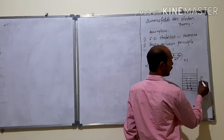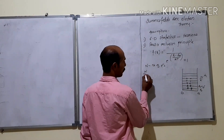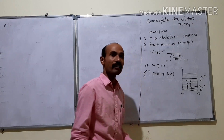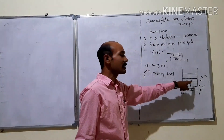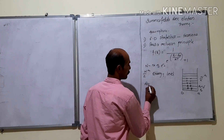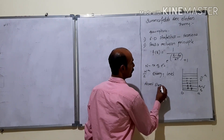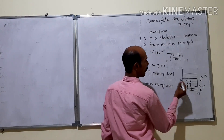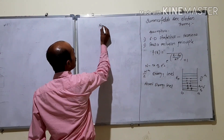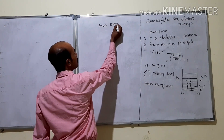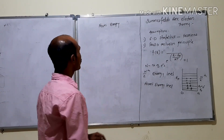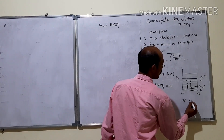At the n/2th energy level, after this level we do not have electrons to fill the upper energy levels. So this is the last filled energy level. This last filled or last occupied energy level is called the Fermi energy level, denoted by EF. The Fermi energy can be defined as the last filled energy level or the last occupied energy level at temperature T equals to 0 K.